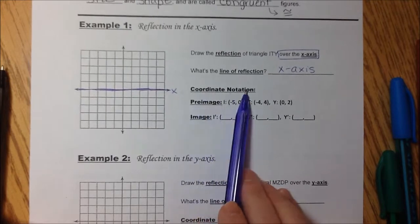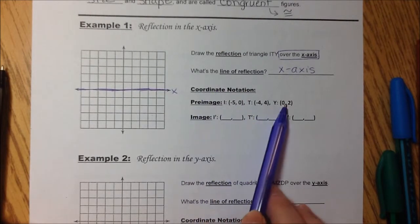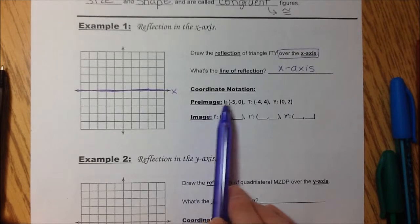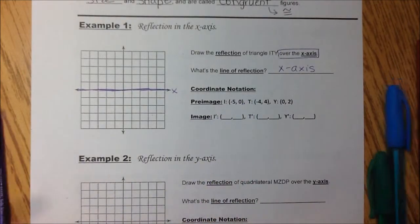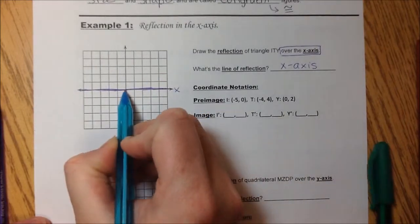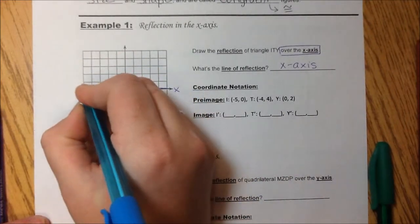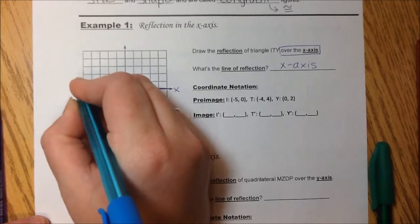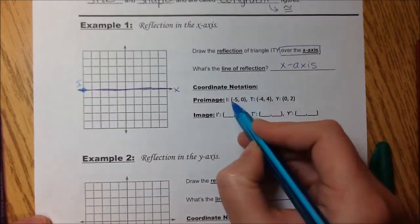Alright, our coordinate notation, which are just the ordered pairs. They give us our pre-image. So light blue. I is negative 5, 0. Start at the origin. 1, 2, 3, 4, 5, 0. That's our I. Make sure you're always labeling your points.